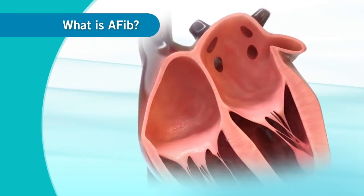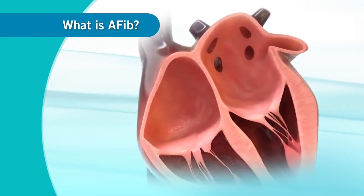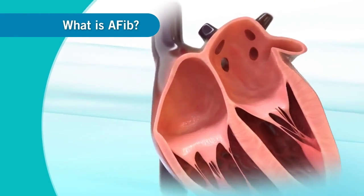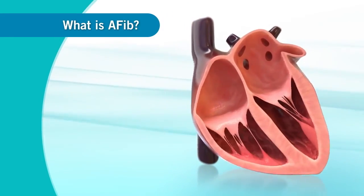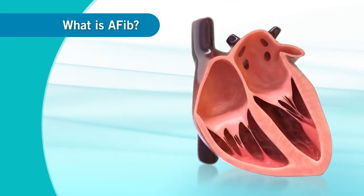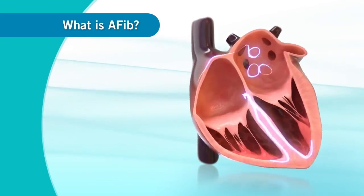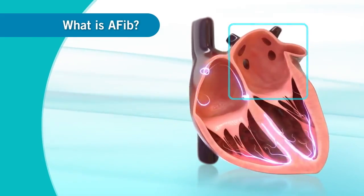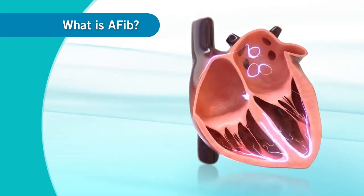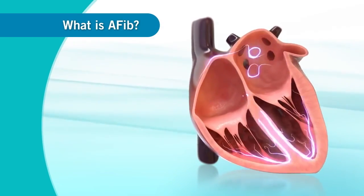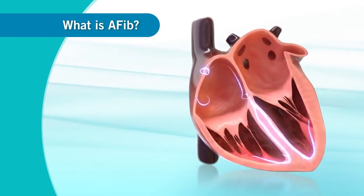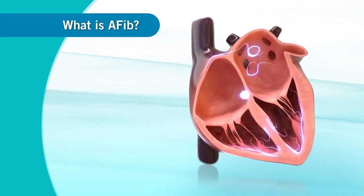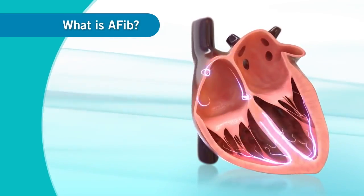Due to this irregular pattern, the atria do not coordinate with the ventricles and the heart is out of rhythm. AFib occurs when electrical signals start in the wrong place and misfire. The faulty signals cause the atria to quiver and not contract completely. Notice how the signals spread in a rapid distance.